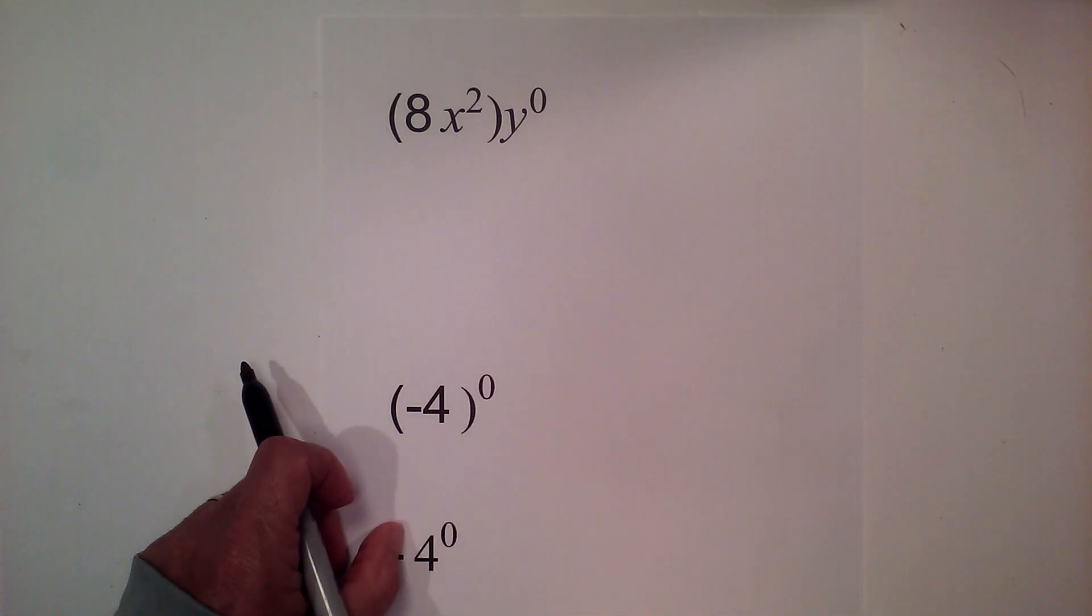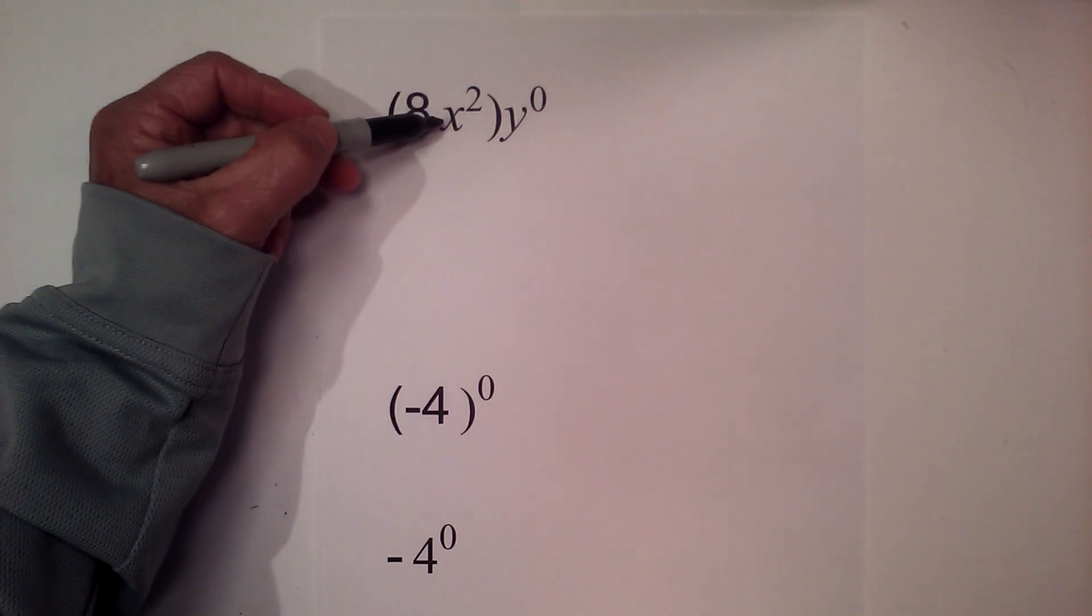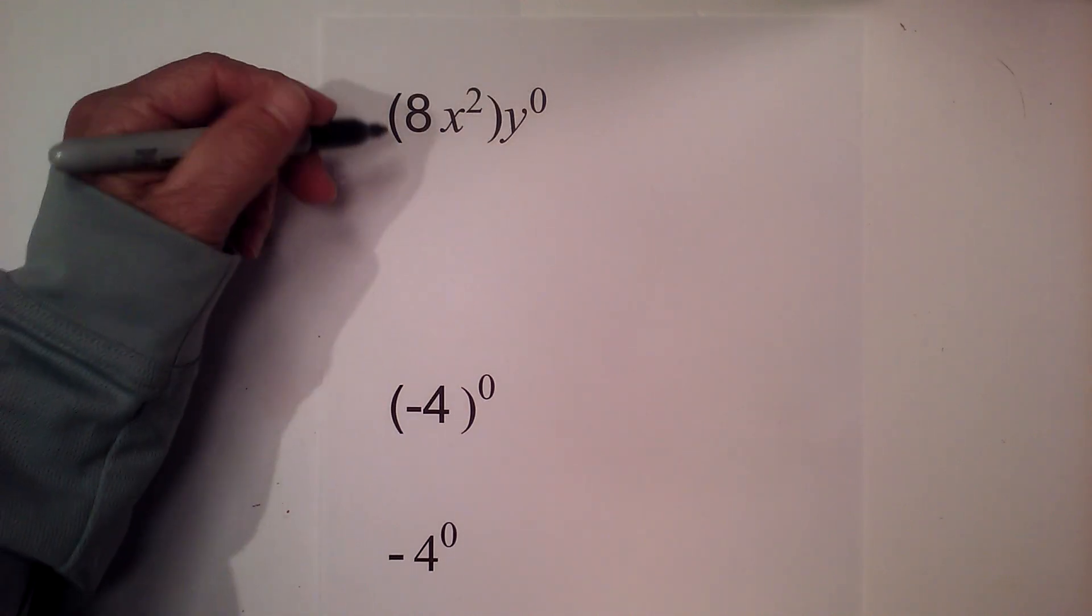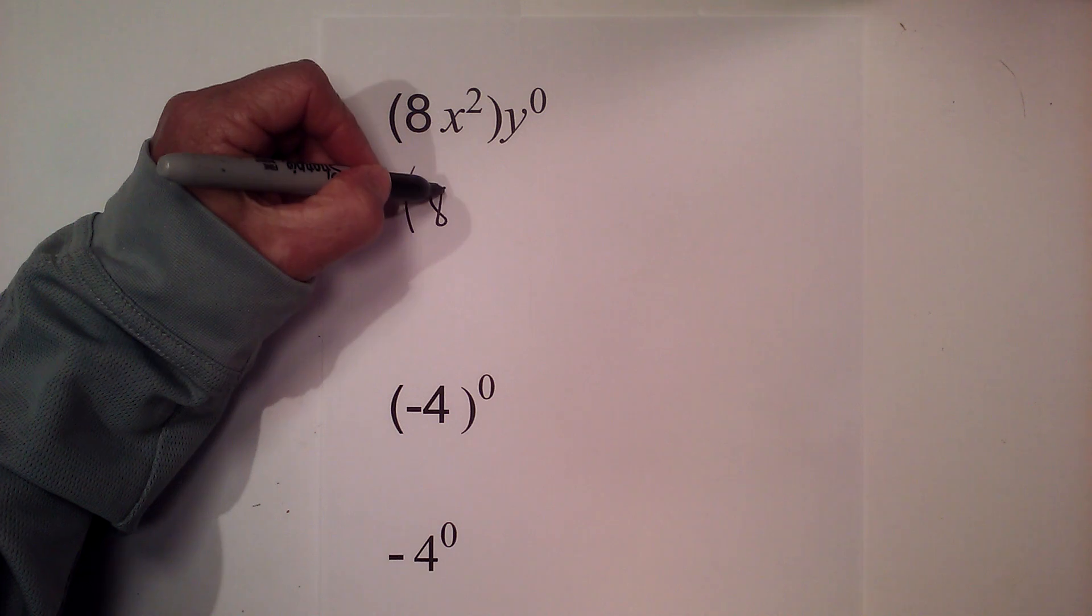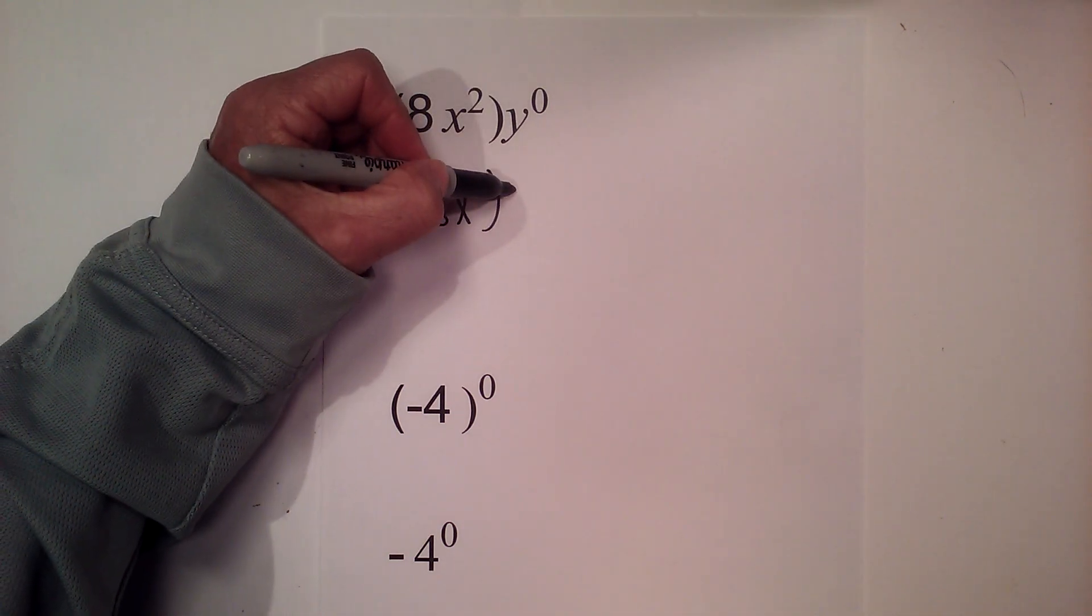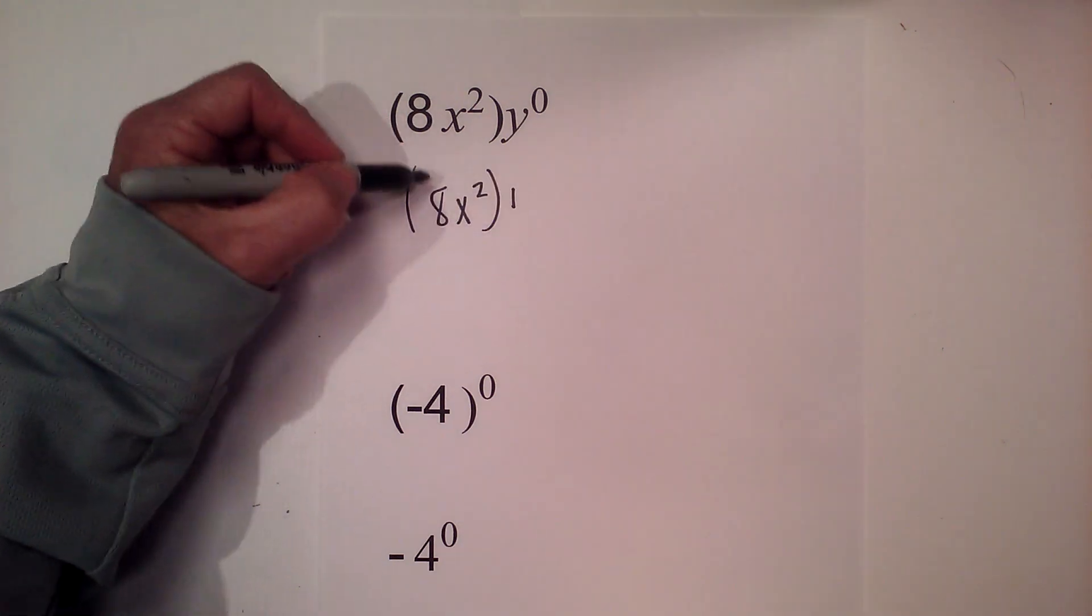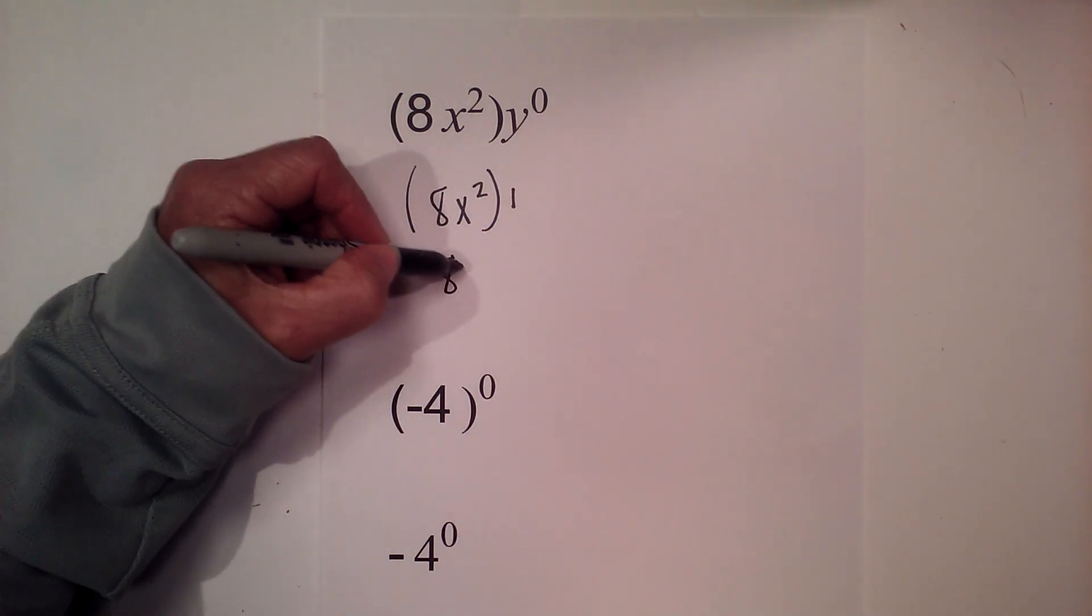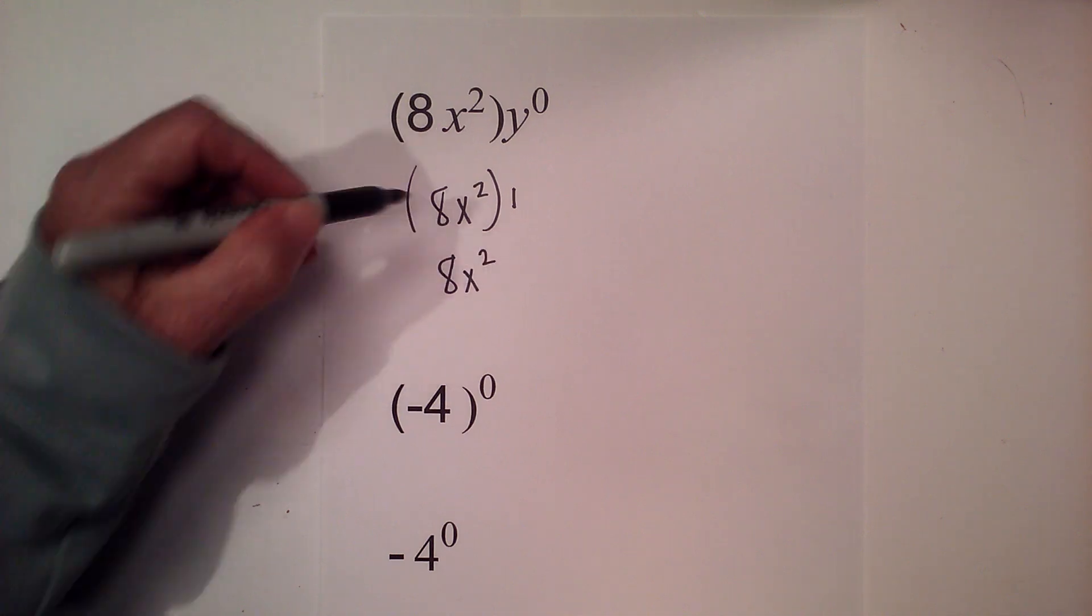Now I've added these next three because it's easy to make a mistake. So we have ax squared and then y to the zero power. So that becomes ax squared, and y to the zero power is going to be 1. And then 1 times ax squared is ax squared.